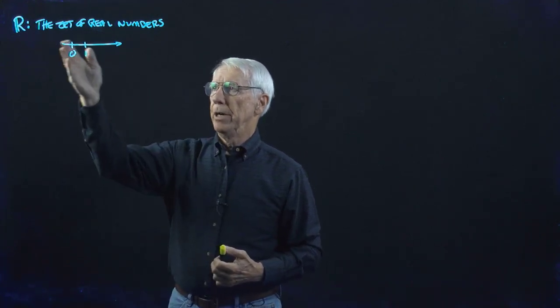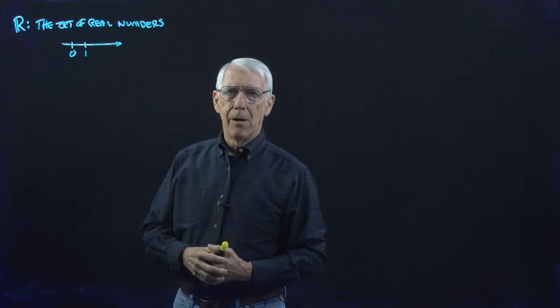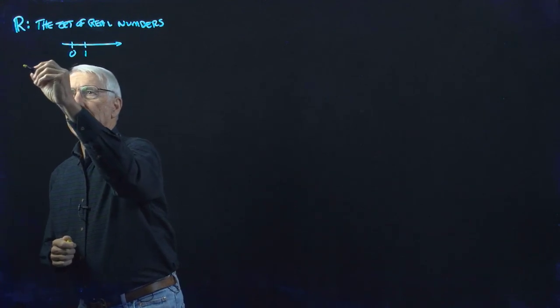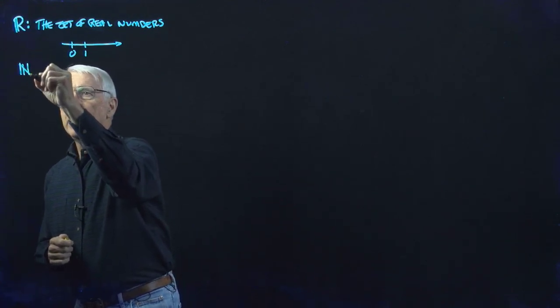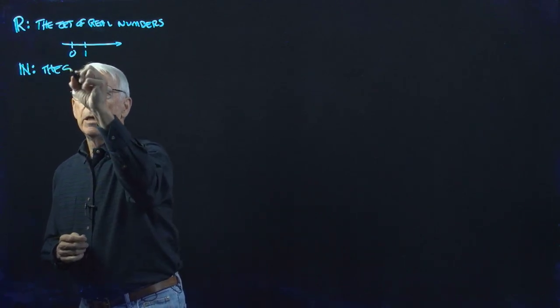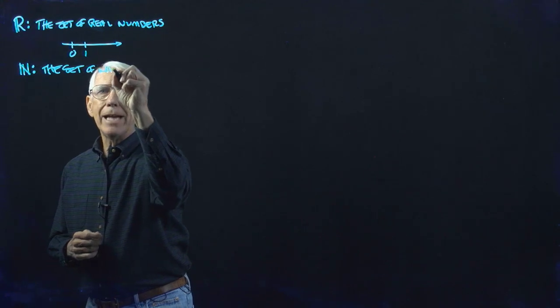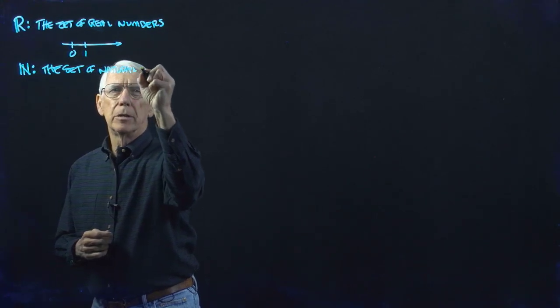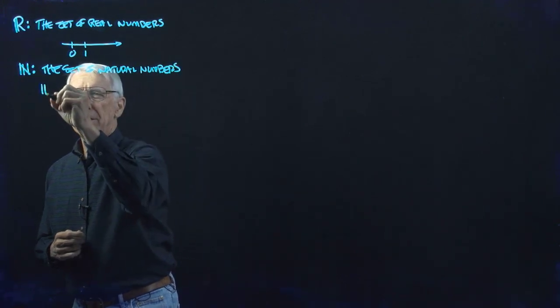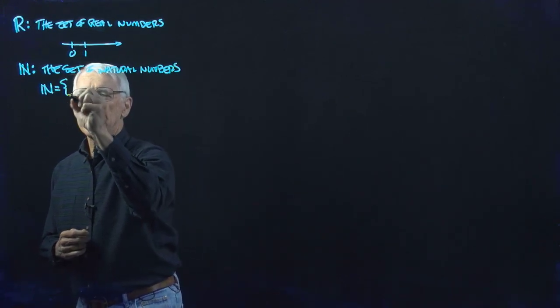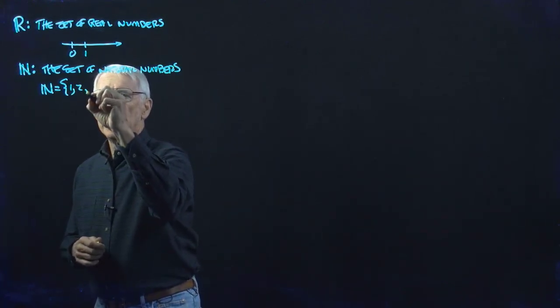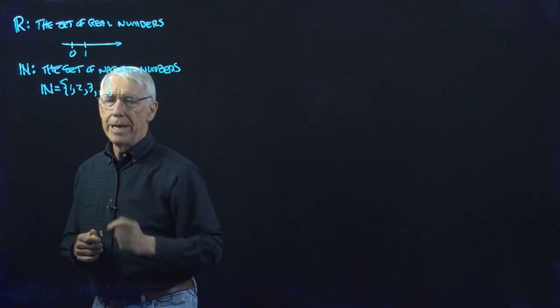We think of the elements of the real numbers as being the points on the line. And then we have this special symbol N, which is the set of natural numbers. That is the set consisting of the counting numbers: one, two, three, and so on indefinitely.